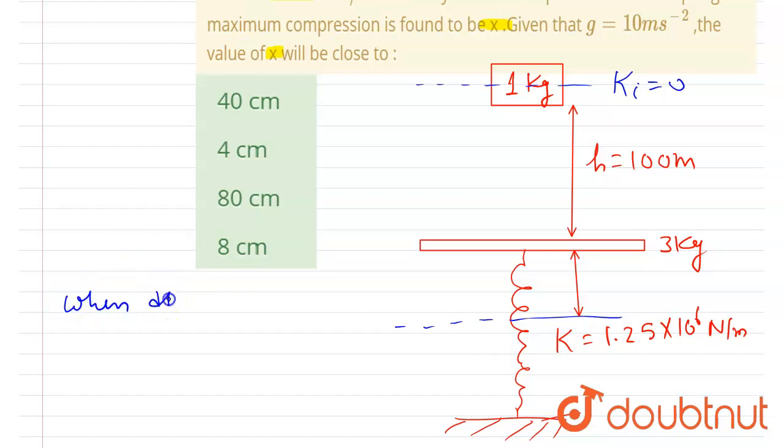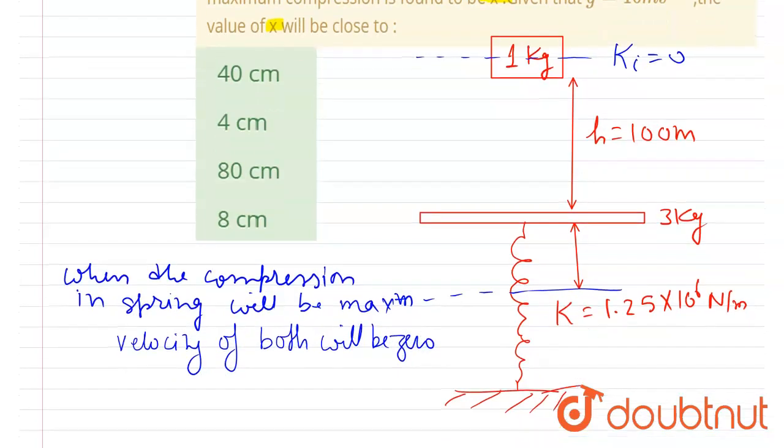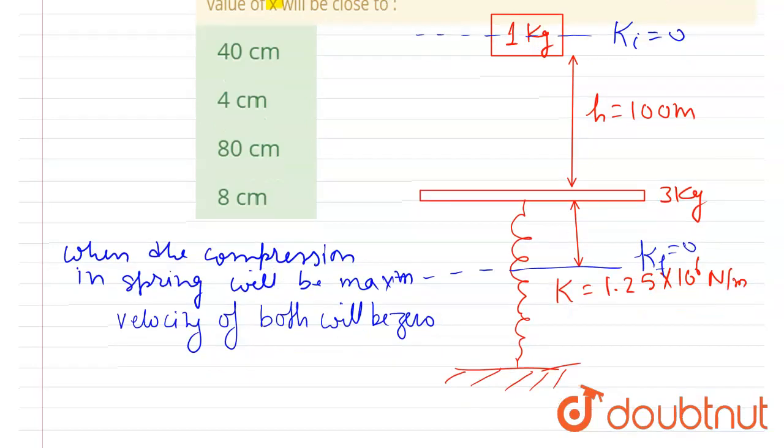And finally when the compression is maximum, the velocity of both will be zero. So I will write here: when the compression in spring will be maximum, velocity of both of them will be zero. Simple. So finally they will have zero kinetic energy.